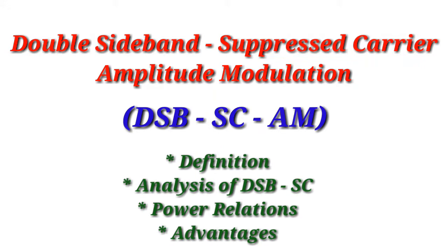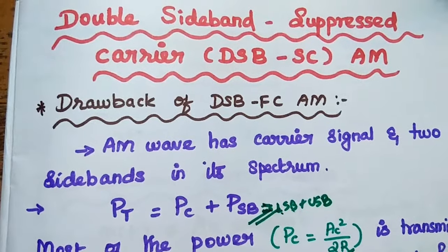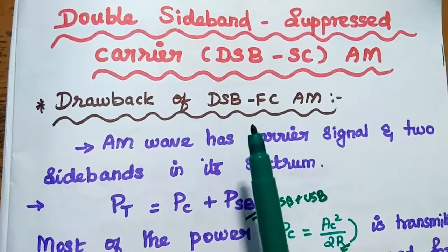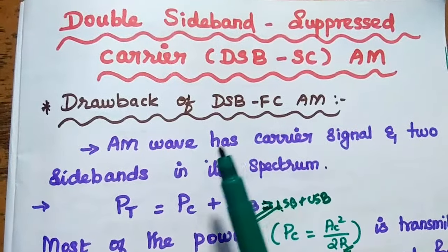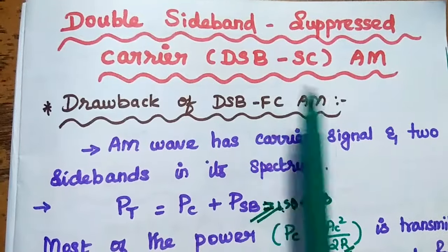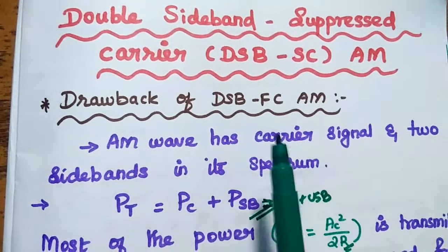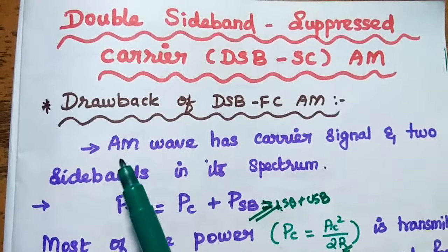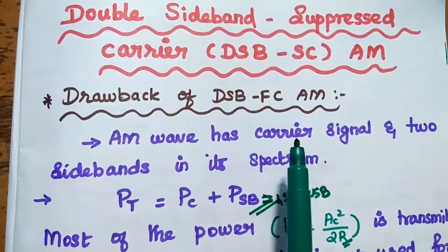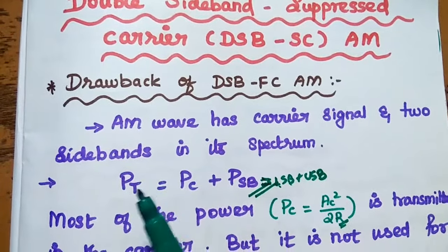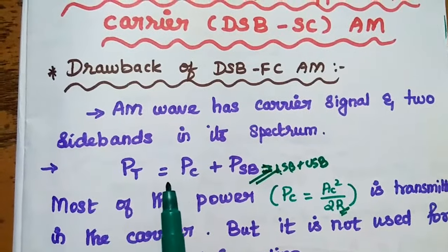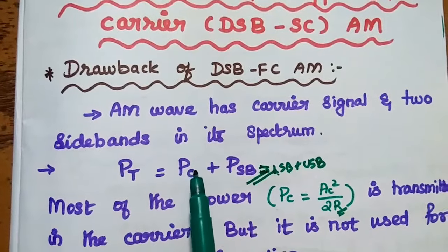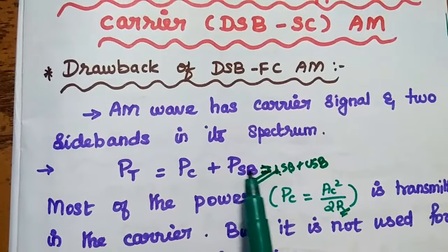Dear students, now we are going to discuss double sideband suppressed carrier amplitude modulation. Let's start with the drawback of double sideband with full carrier amplitude modulation. In the previous lecture video, we discussed about double sideband with full carrier amplitude modulation. In this case, the modulated wave has carrier signal and two sidebands in its spectrum. The total transmitted power is equal to sum of carrier power and sidebands power.